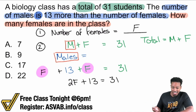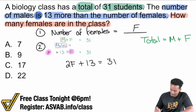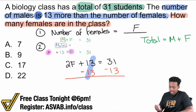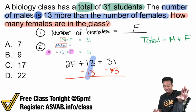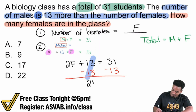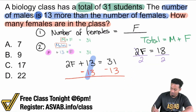Let's make some more room here. Solving equations is the art of working backwards. We see plus 13, so we'll subtract 13. After subtracting 13, that cancels out on the left. 31 minus 13 — instead of subtracting all at once, use mental math: subtract 10, then subtract 3. So 31 minus 10 is 21, and 21 minus 3 is 18. So we have 2F equals 18. Then all we have to do is divide both sides by 2. Dividing both sides by 2 cancels out on the left, giving us F — females equals 9.